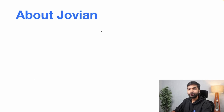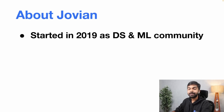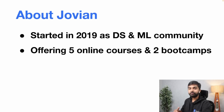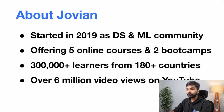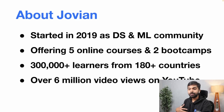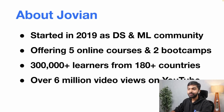A quick note about Jovian for those who don't know already. Jovian started in 2019 as a data science and machine learning community. At the moment, we offer five online courses and two bootcamps. In total, we have over 300,000 registered learners from 180 plus countries, and our tutorials have received over 6 million video views on YouTube. That is why we were encouraged to create a data science bootcamp, and now a Fullstack Development Bootcamp as well.